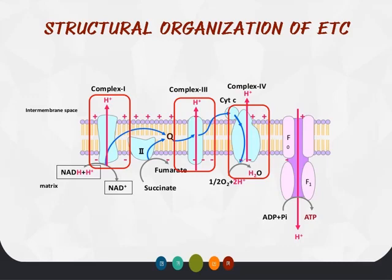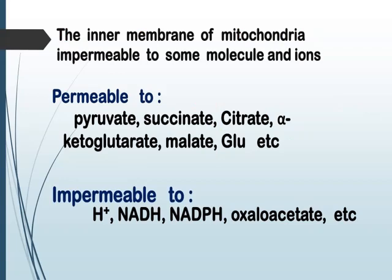Complex IV consists of a pigment material called cytochrome c. Cytochrome c gets oxidized, and ultimately in the presence of oxygen, water and energy in the form of ATP are released. The inner mitochondrial membrane is selectively permeable — it allows certain materials to enter and acts as a barrier to others. The membrane is permeable to pyruvate, glucose, succinate, alpha-ketoglutarate, and malate, but impermeable to hydrogen ions, NADH, NADPH, and oxaloacetate.